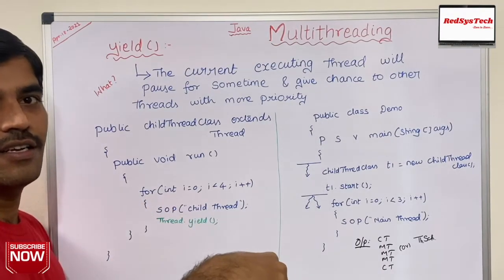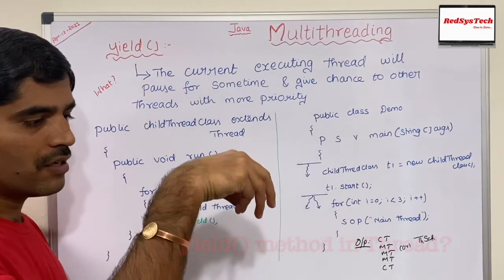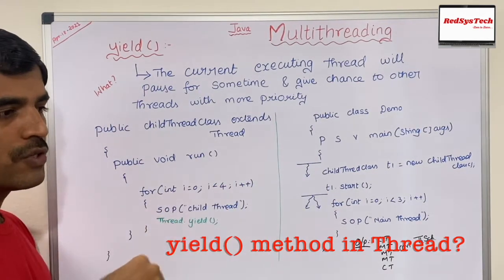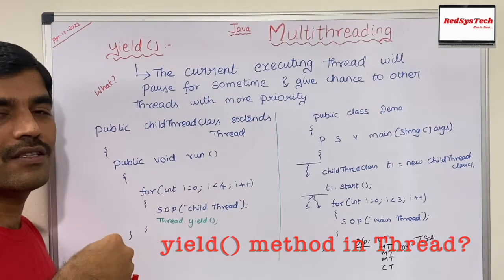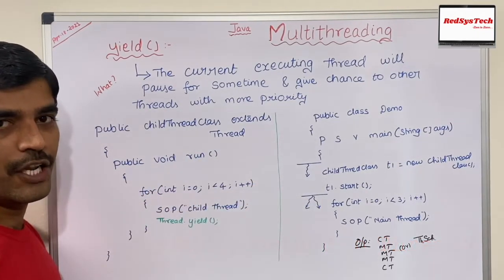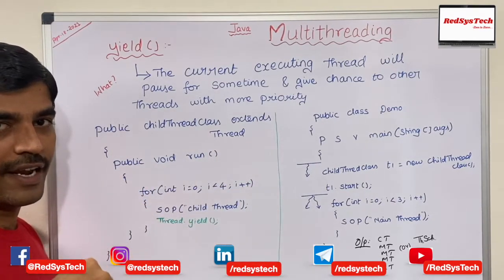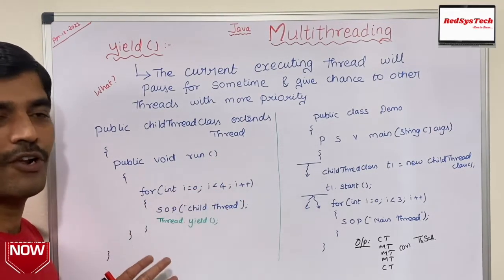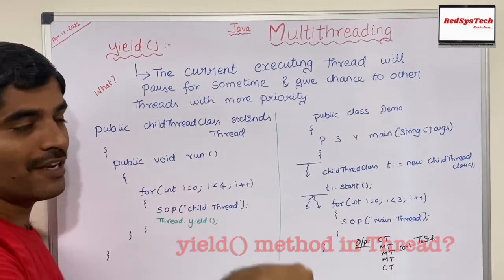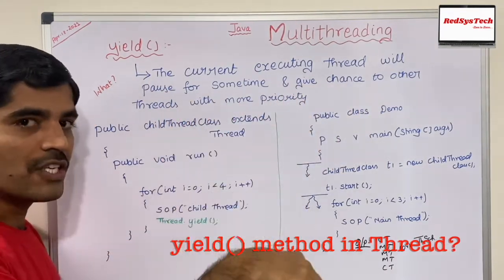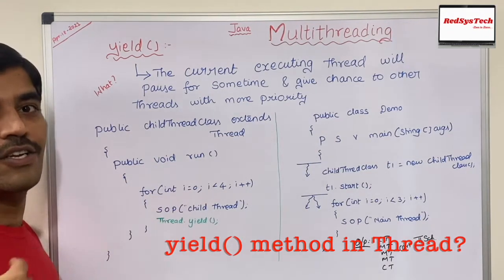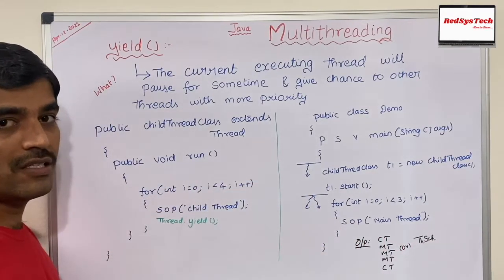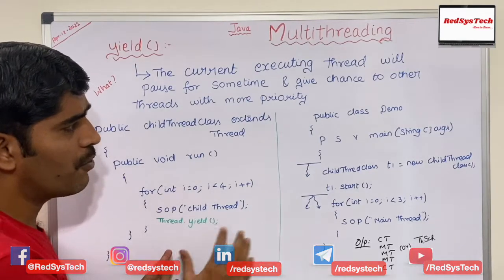While T1 is executing, it checks if any thread is waiting in the execution queue with the same or more priority. If the same priority, it won't cancel — it will continue. If another thread has more priority, T1 gives that thread a chance to execute. The current executing thread passes for some time and gives chance to other threads, then resumes after they complete.